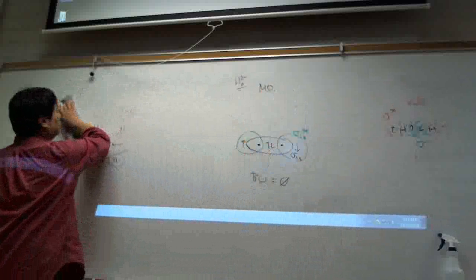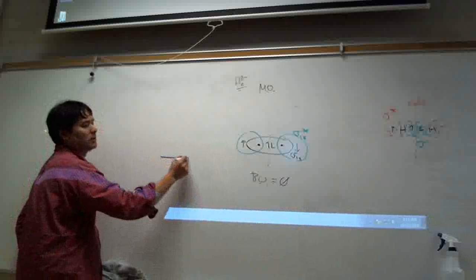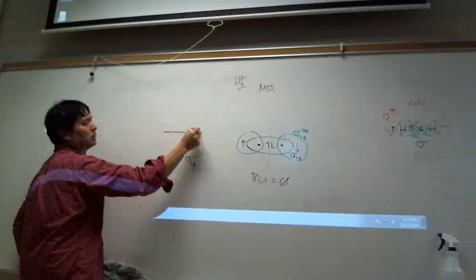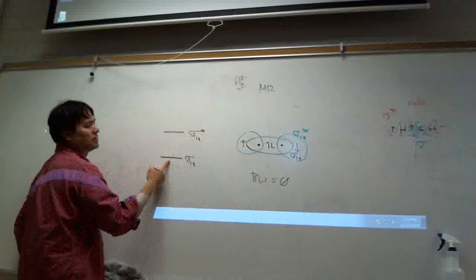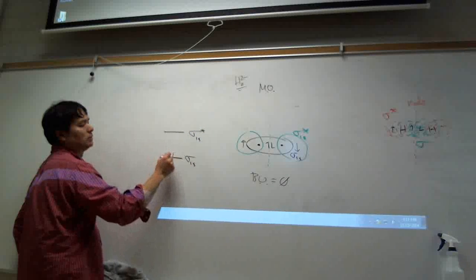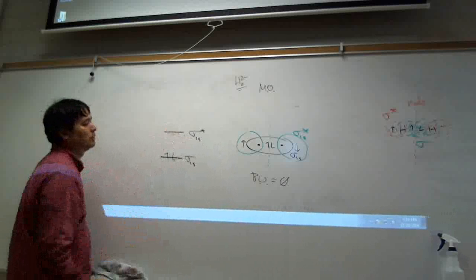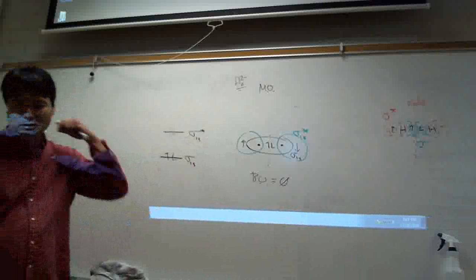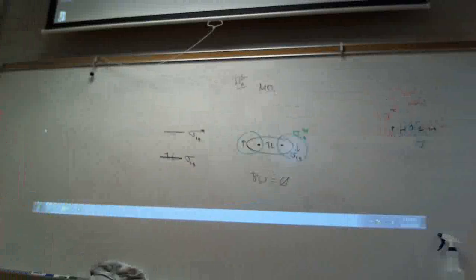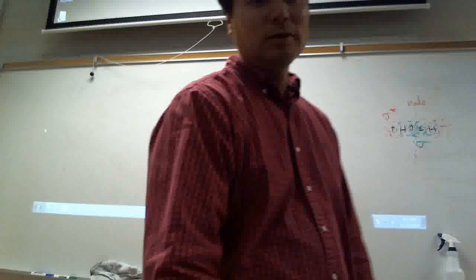MO is powerful because we can also get energies. The sigma 1s is more stable than the sigma star 1s. We still need to cover the rest of the MOs and then look at oxygen.